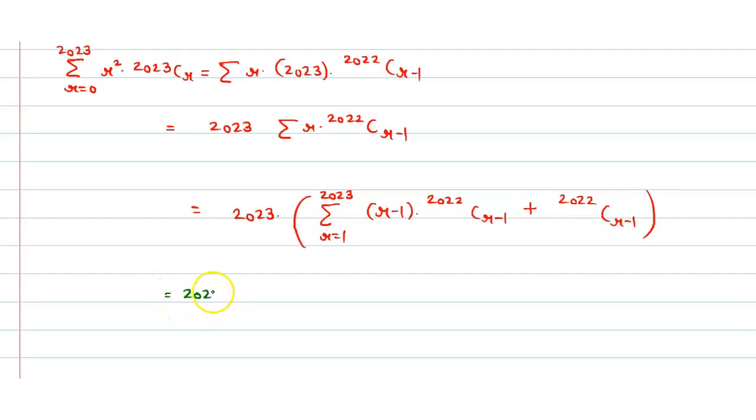Now here it should be 2023 times 2023, sigma r equals 2 to 2023, then 2022 whole power is 2021, then C_(r-2). Plus sigma r equals 1 to 2023, then 2023, then 2022 C_(r-1).